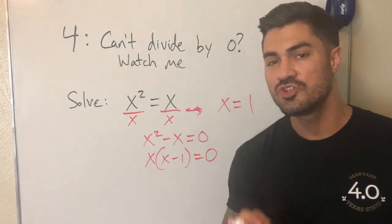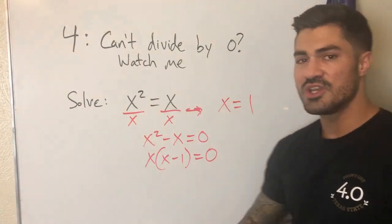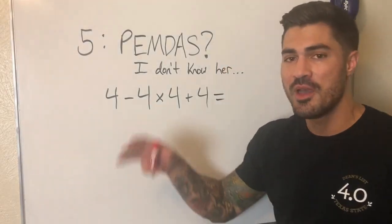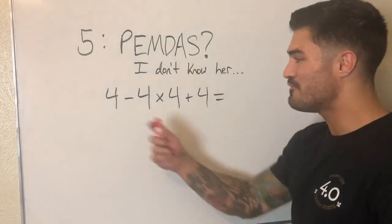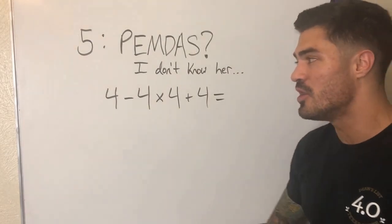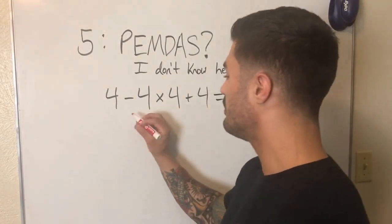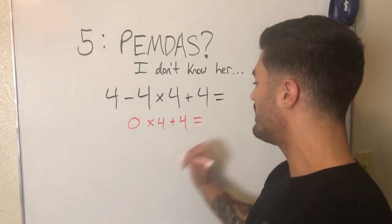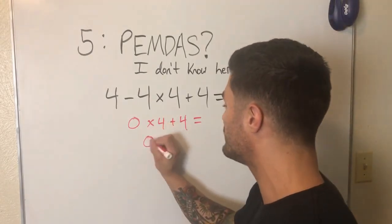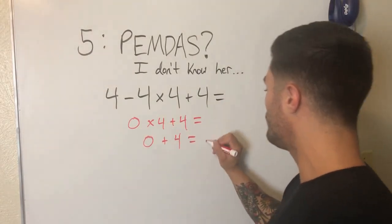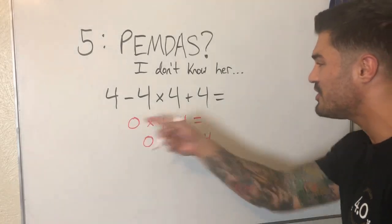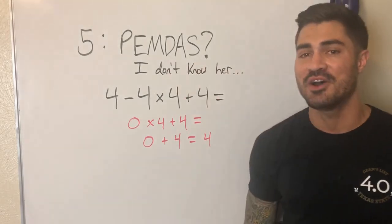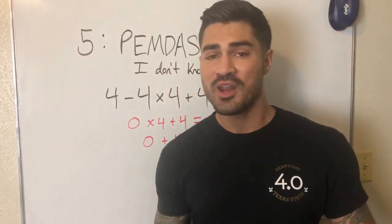Alright guys, here's the last big mistake for this video and I like to call this one 'PEMDAS I don't know her.' And here's why: 4-4×4+4. We're gonna see the mistake, watch closely. 4-4=0. And guess what? I'm gonna write down all the other steps I still have left because I am smart. 0×4, that's 0. Duh, anything times zero. 0+4, that gives me 4. Wow, all this ended up to be 4. Isn't that cool? Right? Wrong. I completely forgot PEMDAS. Like I said, PEMDAS I don't know her, but I should, because if I did, maybe I would have gotten this right.